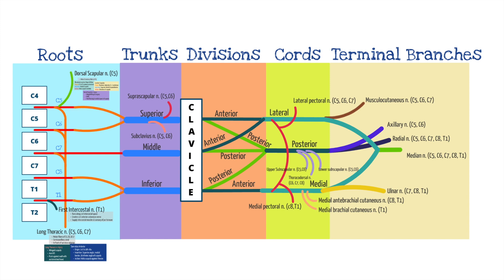There are three trunks: superior, middle, and inferior. The superior trunk is created by C5 and C6. The middle trunk is created by C7, and the inferior trunk is created by C8 and T1.